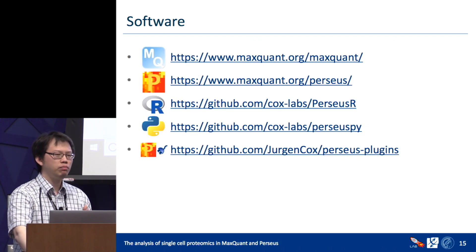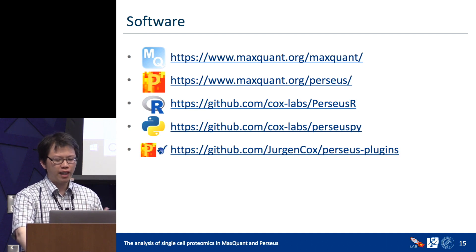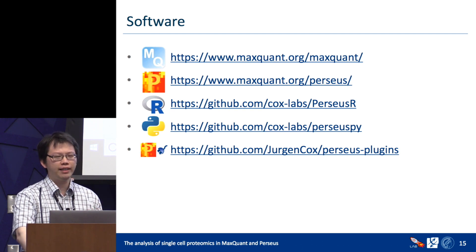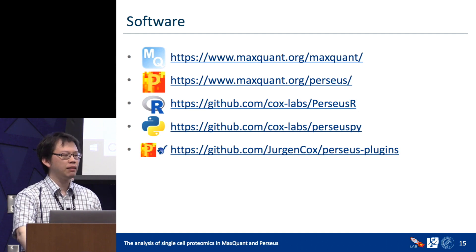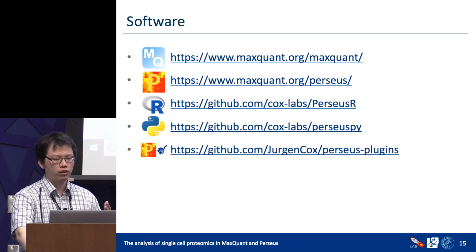Now I want to show you how to do the analysis using MaxQuant and Perseus. First, you need to download the tools. MaxQuant and Perseus can easily be downloaded from the provided URL. If you want to run packages or plugins integrated into Perseus that use R or Python packages, you need to download PerseusR and PerseusPy. If you want to create a plugin yourself, you can download the Perseus plugin and write your own code in R or Python and integrate it into Perseus — it's quite flexible.